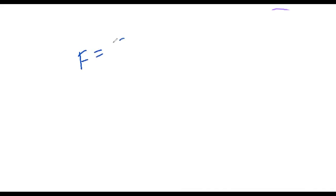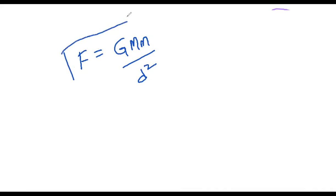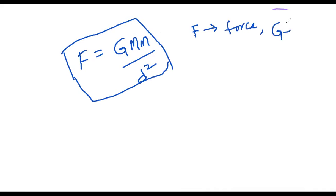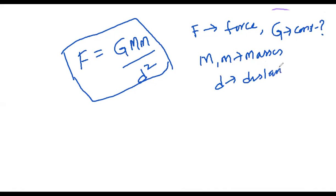One more question, then we'll move into motion in a straight line. The equation is: F = G×M×m / d². This is Newton's gravitational law. F is force, G is the gravitational constant — we need to find its dimensional formula. Capital M and small m are masses, d is distance.